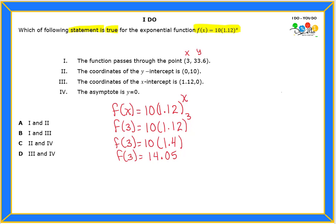What does that mean? It means that when x is 3, my y value will be 14.05. Is that what number one says? No. Statement one says it's 33.6, so therefore statement number one cannot be one of my true statements.